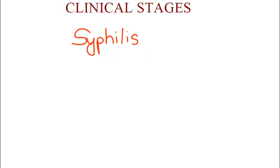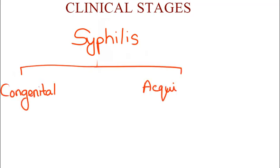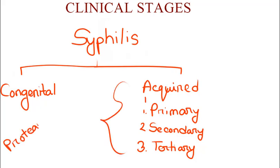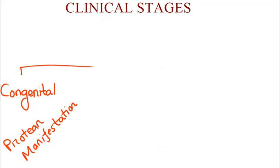Clinically, syphilis can be categorized into congenital and acquired types. Based on the clinical course, acquired syphilis is further divided into primary syphilis, secondary syphilis, and tertiary syphilis. We will do detailed demonstration on each one of them. One important thing is that this variation in clinical features is known as protean manifestation of the disease — this is one of those rare pieces of interesting information that they won't tell you in class.